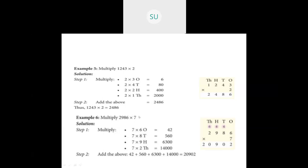Similarly, 2986 into 7. 7 sixes are 42 — write 2 and carry over 4. Then 7 eights are 56 plus 4 is 60 — write 0 carry over 6. 7 nines are 63 plus 6 is 69 — write 9 carry over 6. And 7 twos are 14 plus 6 is 20. So 20902.